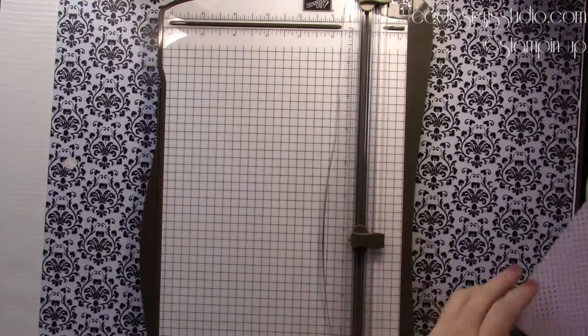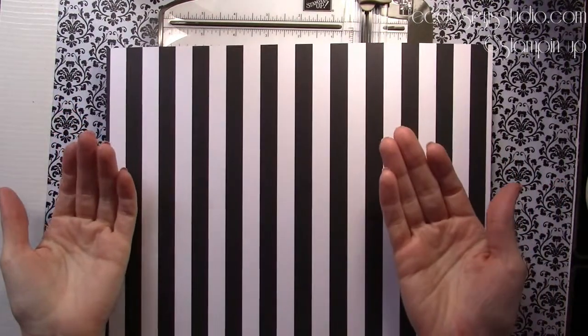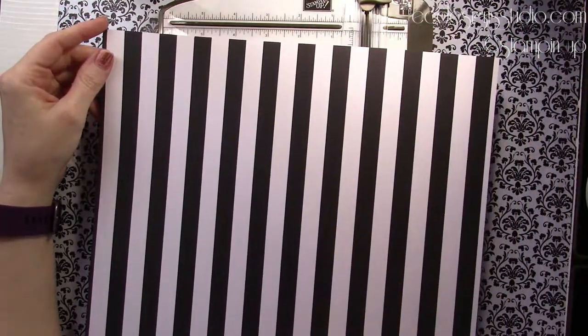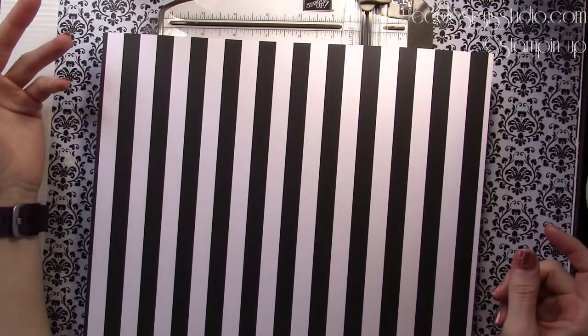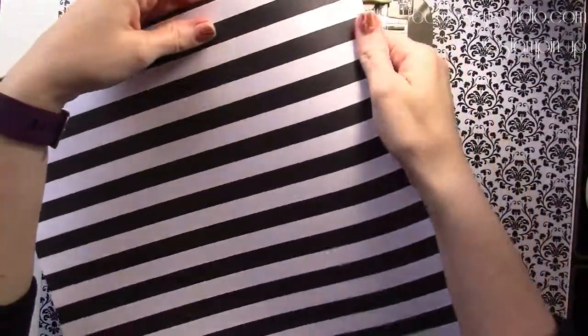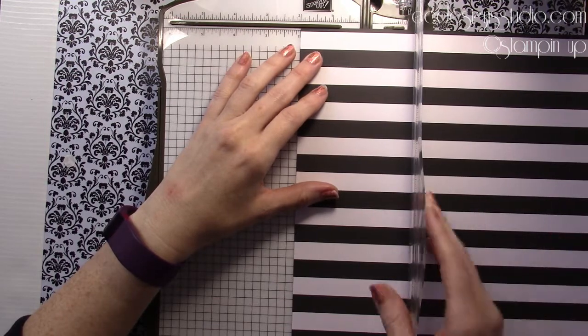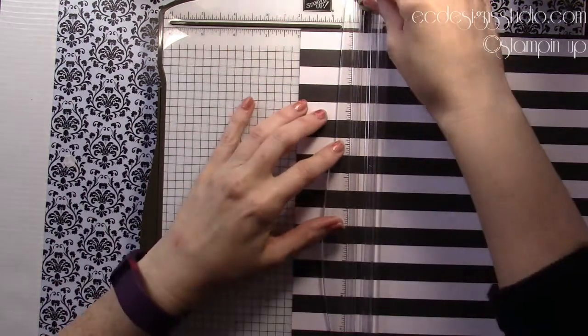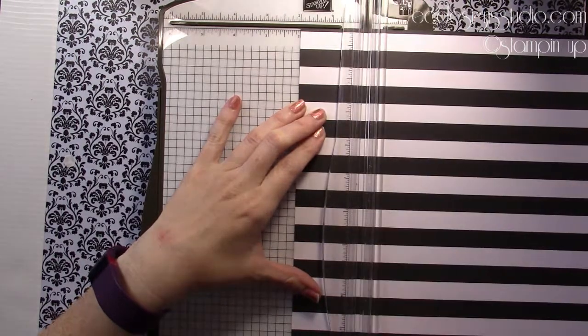So step number one, you're going to take your designer series paper and turn it over to the side that you're going to want to be your cover. Now your ends are going to fold up to create pockets on the other side. So decide right now which direction you want those pieces to be going. So my cover's facing top. I'm going to score at two inches. Get a nice good score.